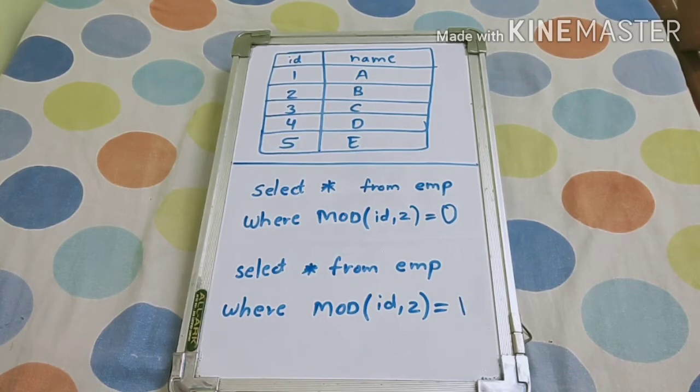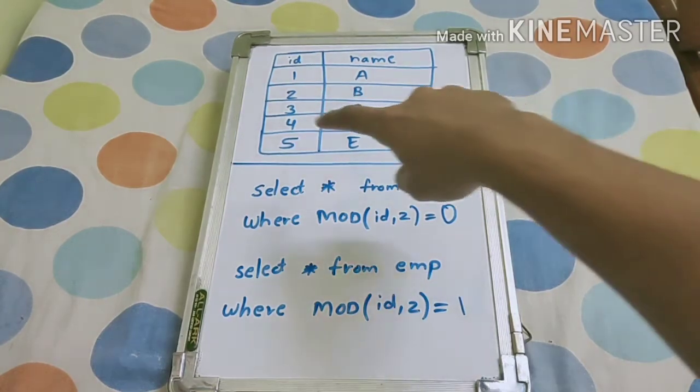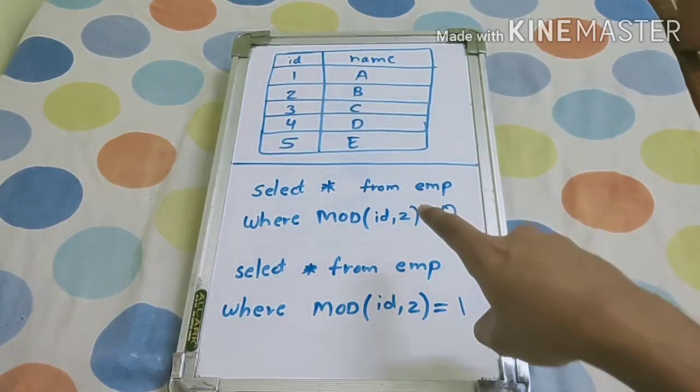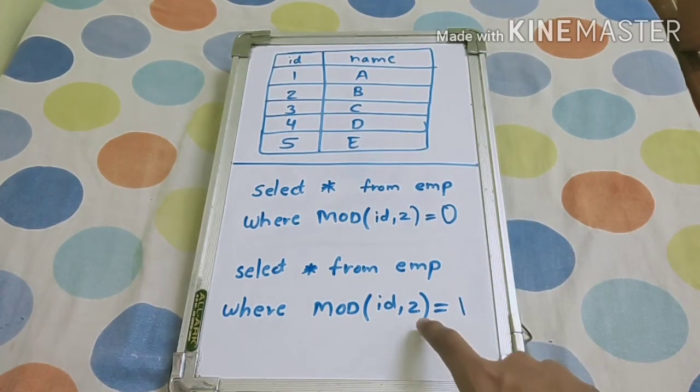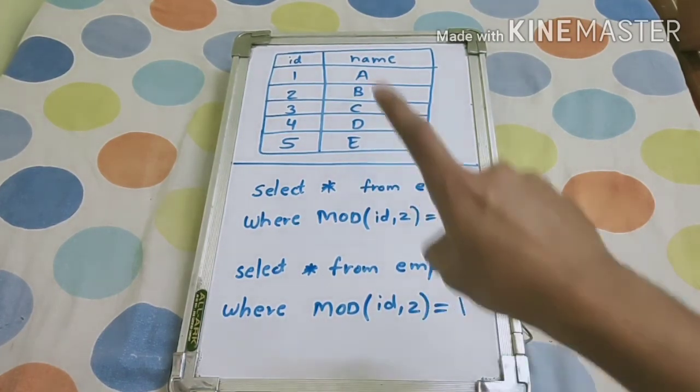If we divide ID 1 by 2, we will get 1 in the remainder, so it will print odd number in the odd case, right?